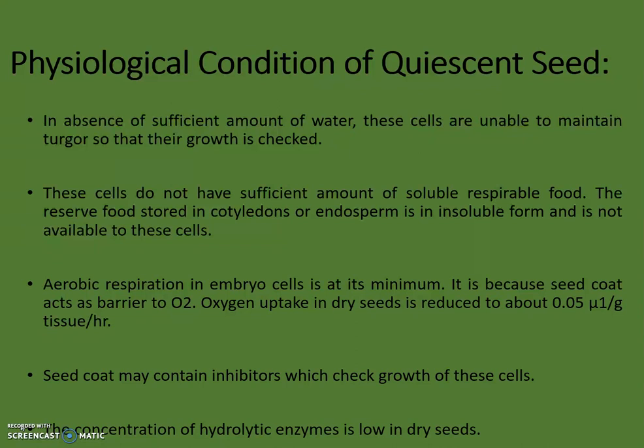The second reason is that these cells do not have a sufficient amount of soluble respirable food — the reserve food stored in cotyledons or endosperm is in insoluble form and is not available to the meristematic cells. Aerobic respiration in embryo cells is at its minimum because the seed coat acts as a barrier to oxygen, and the seed coat may contain inhibitors which suppress growth of the cells. Also, the concentration of hydrolytic enzymes is low in dry seeds. All these conditions are overcome if seeds are placed under suitable conditions essential for germination. In most cases, seed germination begins just by placing the dry seeds on a moist substrate.